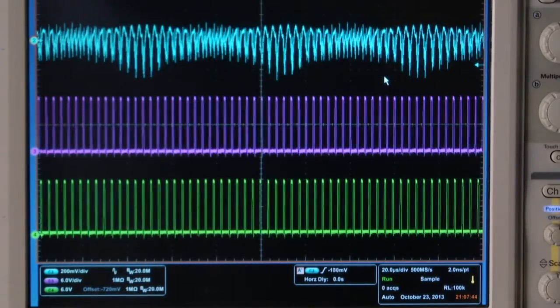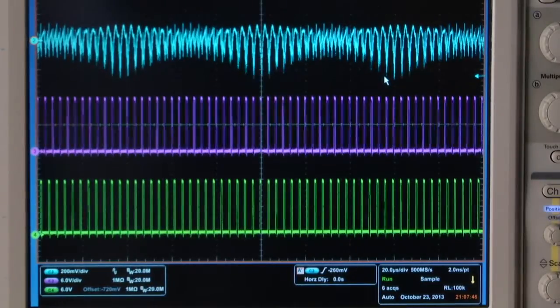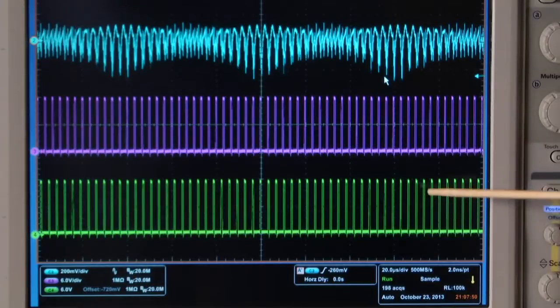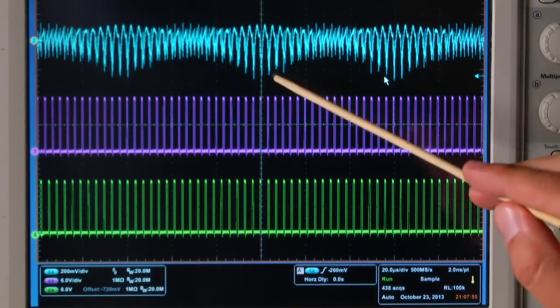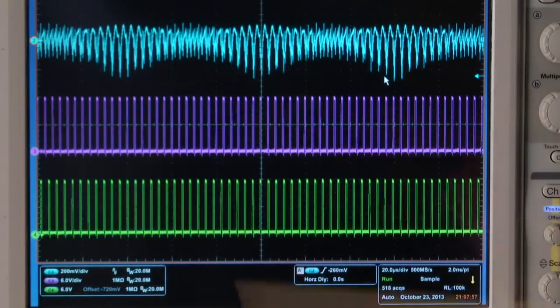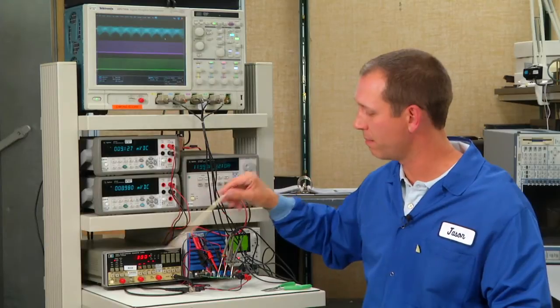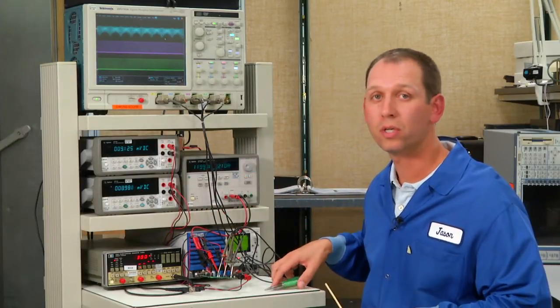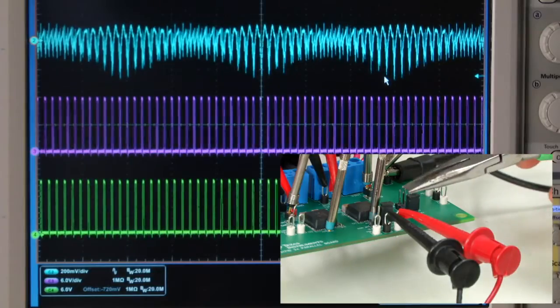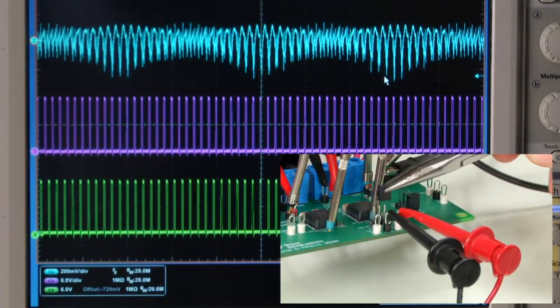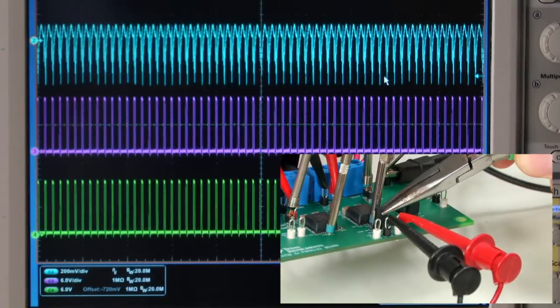As I trigger on this waveform, what we're seeing is because of the frequencies being out of sync, we also have a beat frequency on top of the input voltage ripple. By introducing the external clock, I'm going to apply a 300 kilohertz clock to the input of the devices.